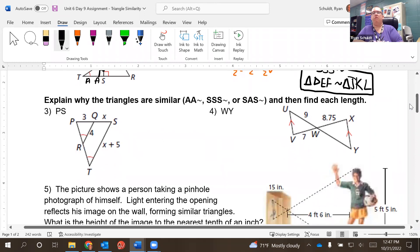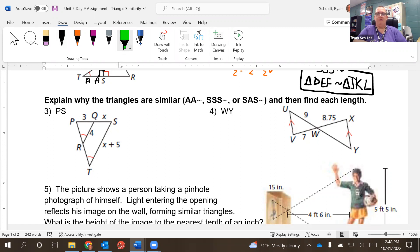There we go. Number three, we have to explain why the triangles are similar and then find each length. So they ask us to find PS. That's our task, PS. First, we have to say how they're similar, though.